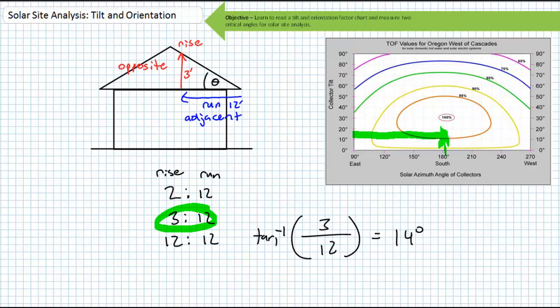Assuming everything inside this second ring is greater than 95%, we'll just assume we're at 96%. For a low slope 2 over 12 pitch roof, you'll find the inverse tangent of 2 over 12 is giving us an angle of roughly 9.5 degrees. This tilt angle, even with a perfect orientation of 180 degrees, our TOF number is right on the 95% ring.